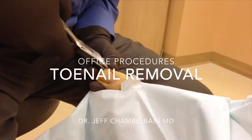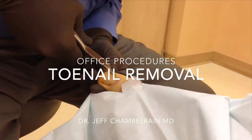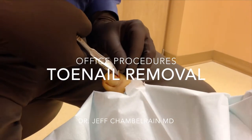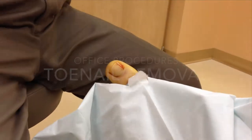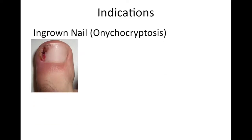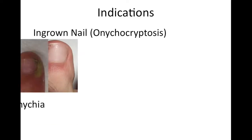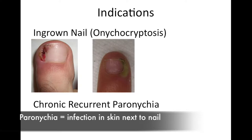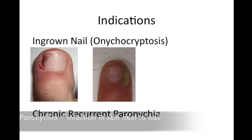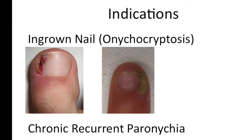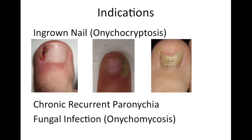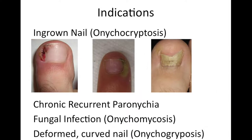Today we're going to talk about the procedure your nurse wishes she didn't have to do: toenail removals. There are multiple indications for toenail removal. We have onychocryptosis, or ingrown toenails, and chronic recurrent paronychia — these two often go together, as chronic ingrown toenails typically cause recurrent infections. Other indications include onychomycosis, which is a fungal infection, or onychogryposis, which is a deformed nail.